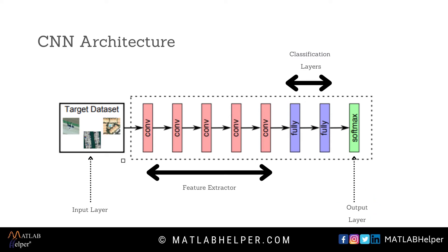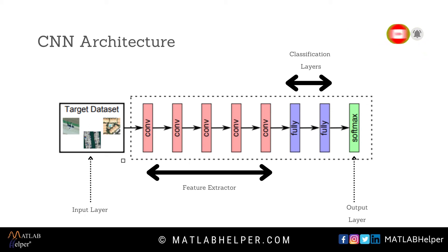In transfer learning, we freeze the feature extractor and retrain the classification part. But in fine tuning, we initially retrain the classification part and, depending upon accuracy, we can also retrain layers from the feature extractor. Generally the feature extractor extracts high level features, so the network would be more accurate after doing fine tuning.